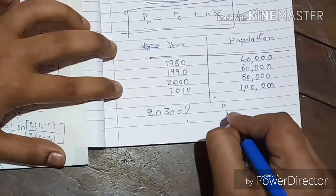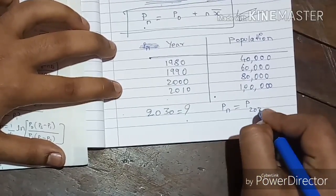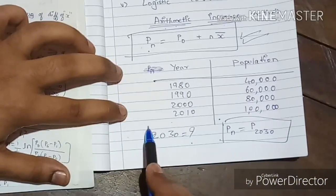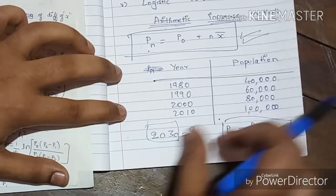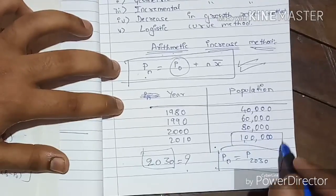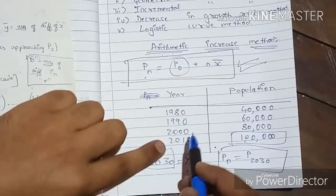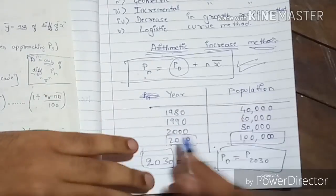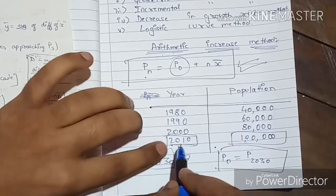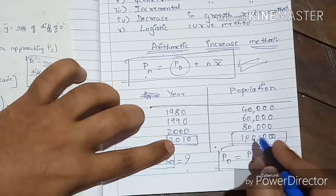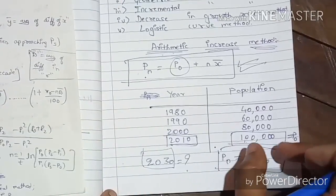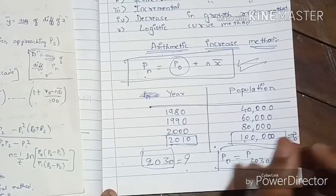So Pn here would be P(2030). P0 is the last known decade's population — in this case, 2020 data is not given, so the last known decade is 2010. Therefore, P0 is 1 lakh, the population at 2010, which is the last known decade's value.